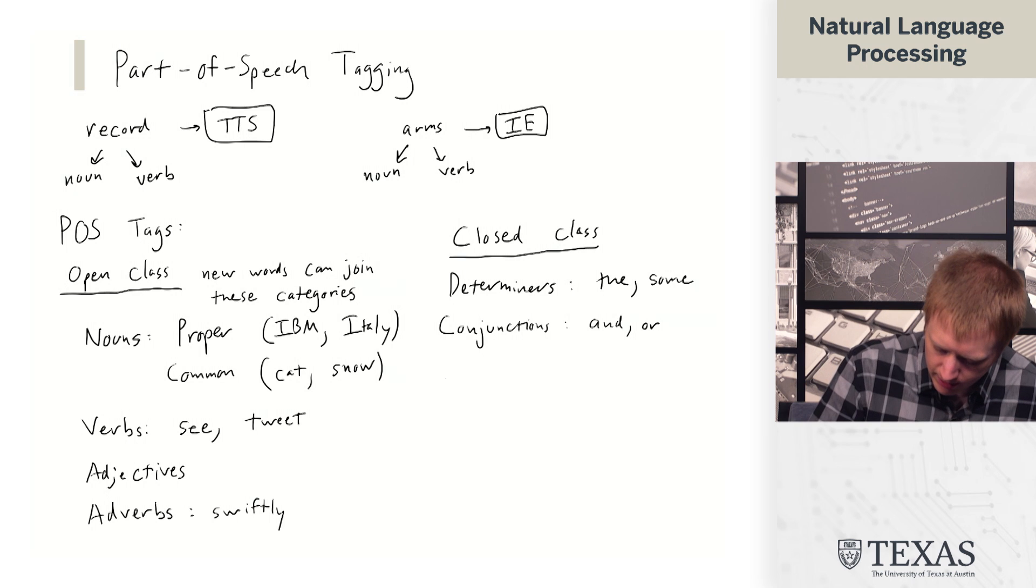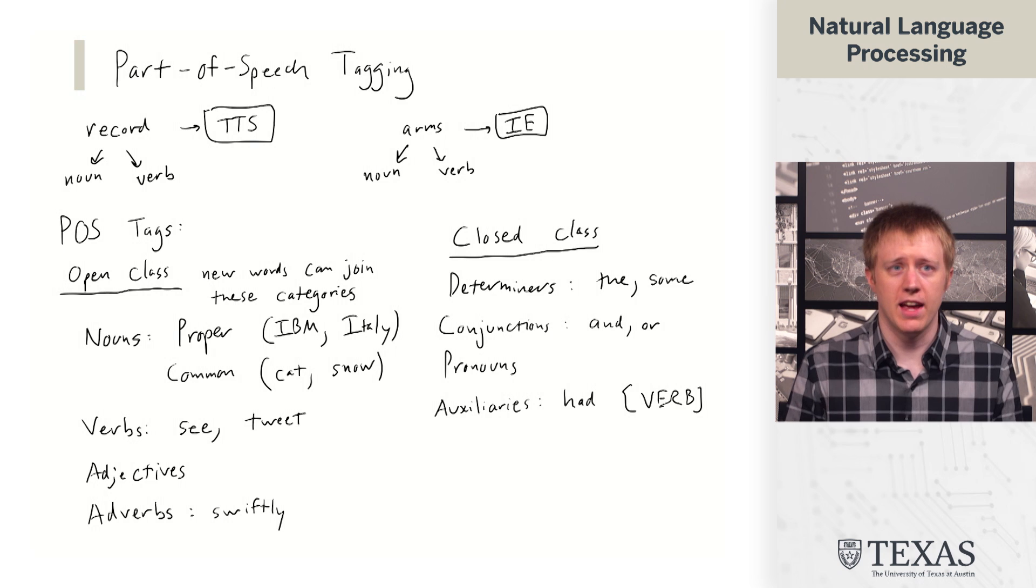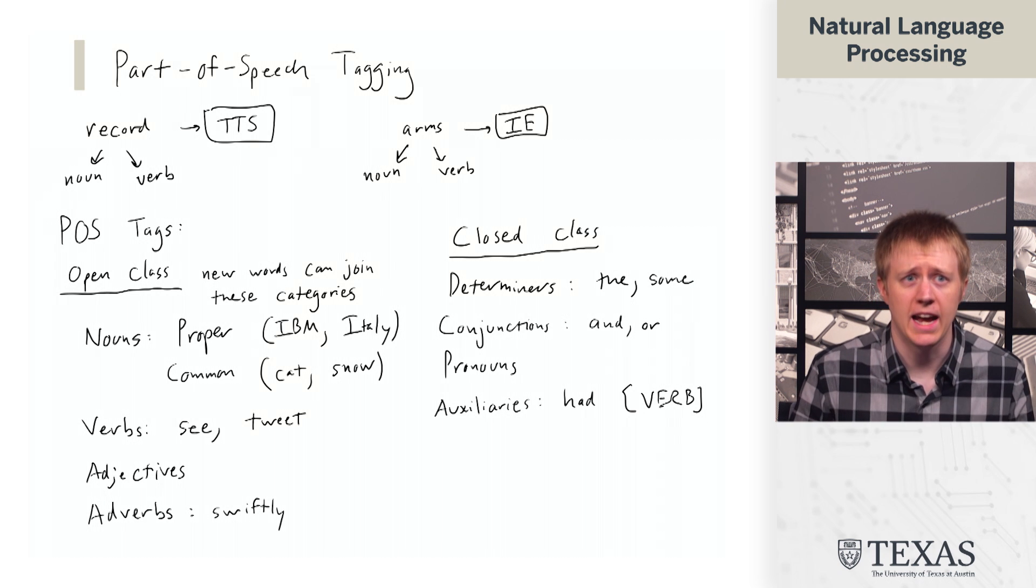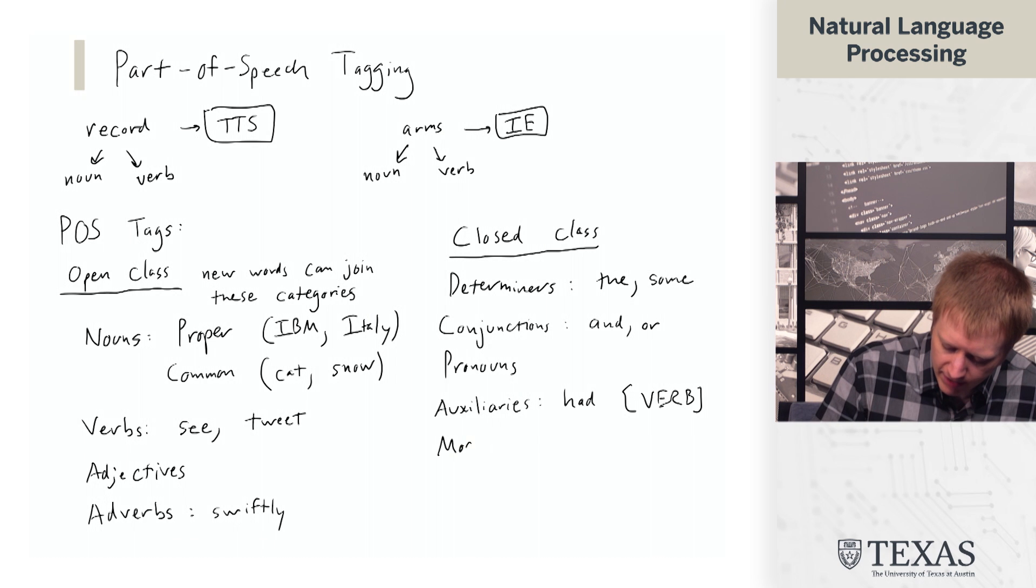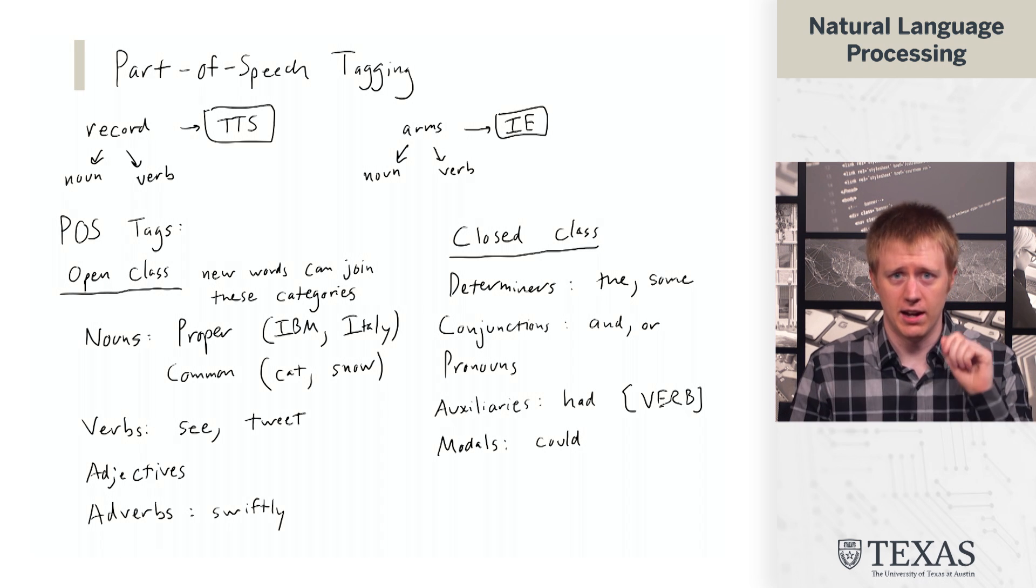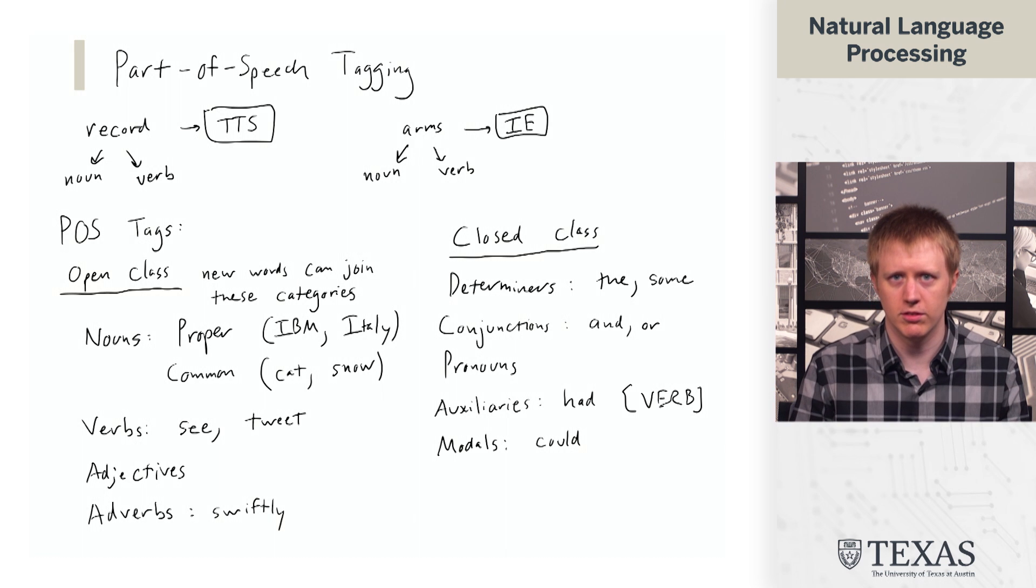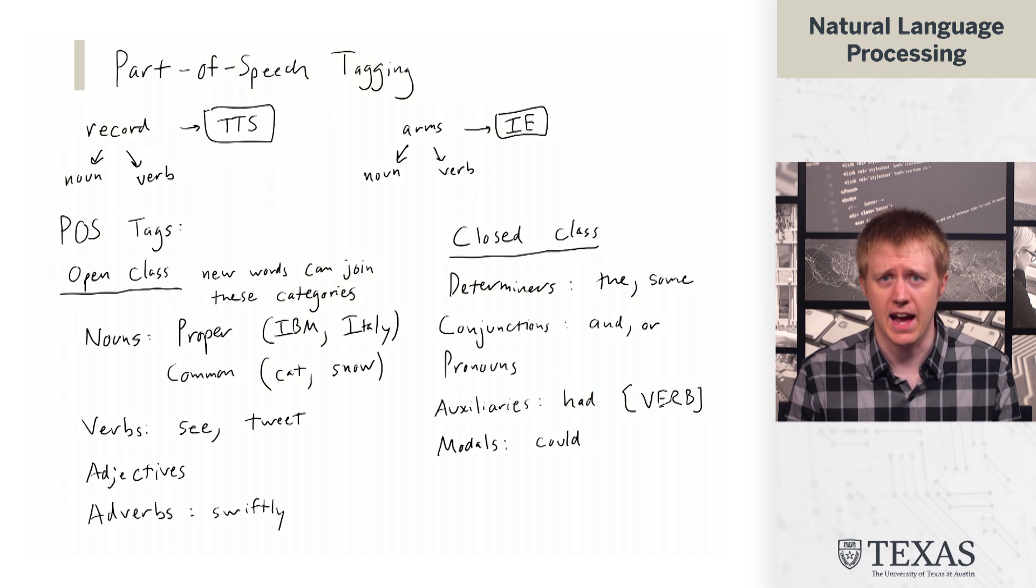Conjunctions are another one, like and, or pronouns. Then we have a couple of verbal categories here, like auxiliaries. For example, had when it's followed by a verb. Saying I had three apples is not an auxiliary, but I had gone to the store when—that is an example of it as an auxiliary. And then also modals, words like could. I could have gone to the store. That implies a certain modality about the statement, your ability to do it in this case.